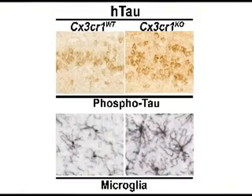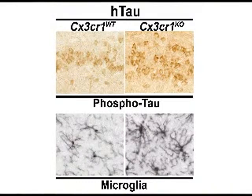At six months, we studied microglial activation and tau pathology in the CX3CR1-deficient HTau mice. It was very evident that CX3CR1 deficiency in HTau enhanced tau phosphorylation as well as microglial activation, specifically at six months.